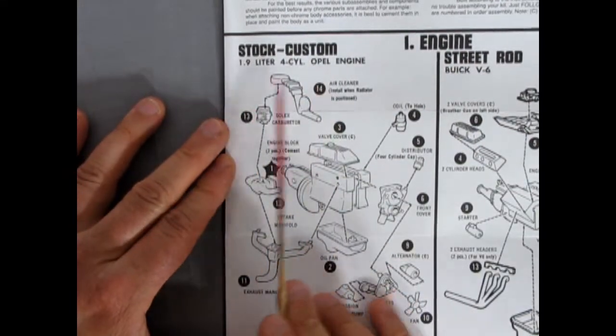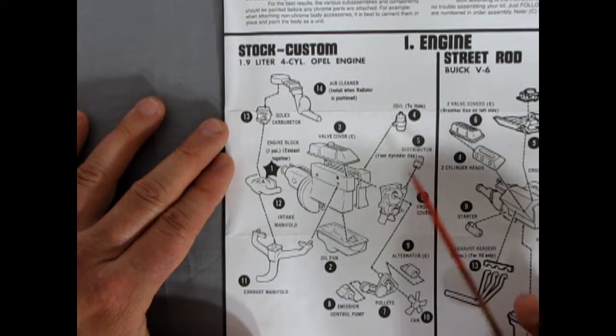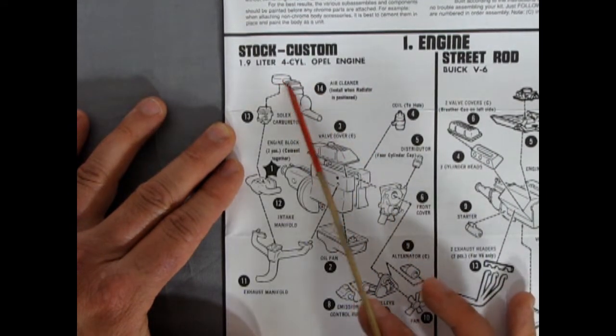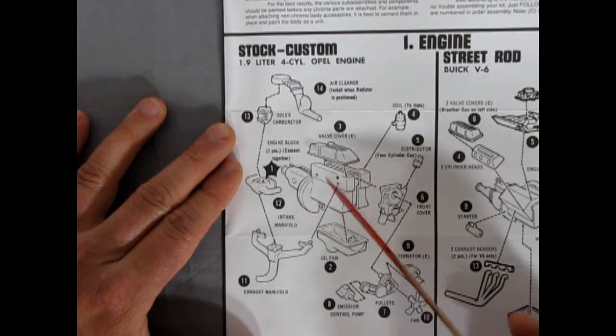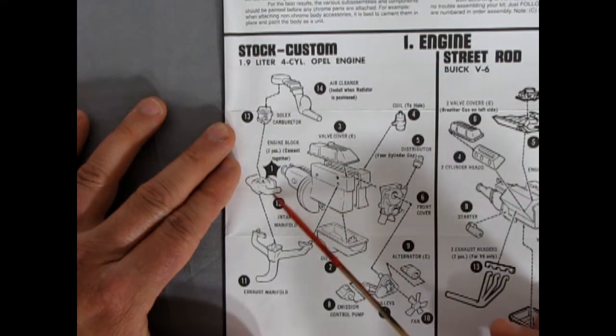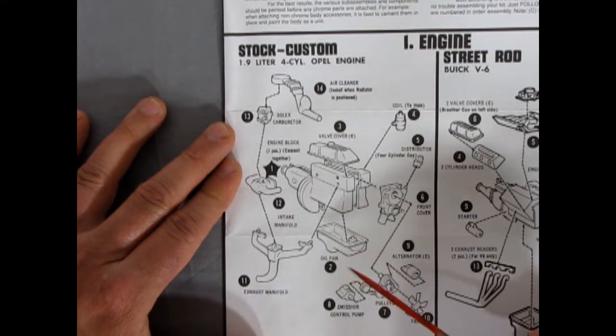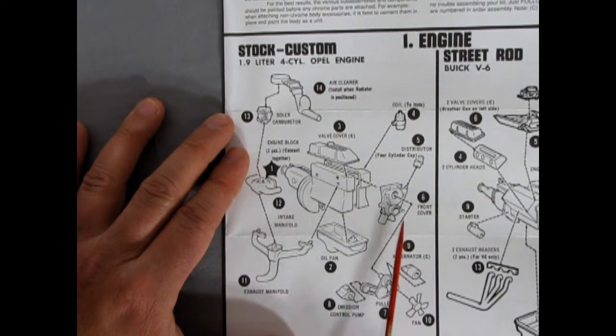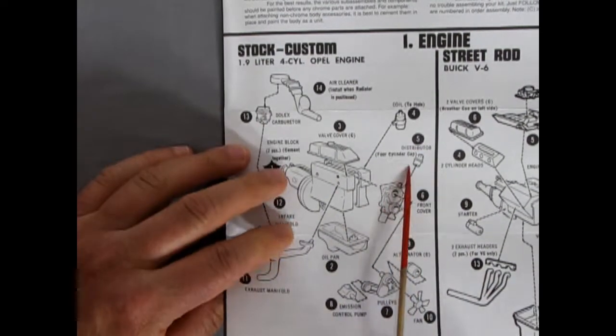To start off with we have the stock custom 1.9 liter four-cylinder Opel engine. And as you can see it's got a Solex carburetor, this really bizarre air cleaner. We've got a coil here for our engine, valve cover, the two halves of the engine block going together. The Solex carburetor of course is going to sit on this intake manifold and the intake manifold sits on top of the exhaust manifold. Got this nice oil pan here, emission control pump, your pulleys, fan, alternator, the front cover for the engine, and of course the distributor with a four-cylinder style cap.